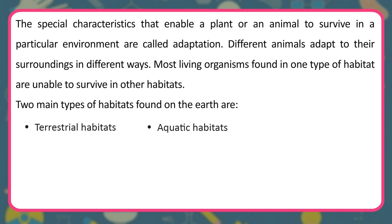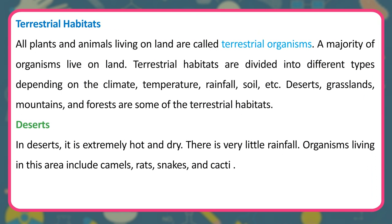Most living organisms found in one type of habitat are unable to survive in other habitats. The two main types of habitats on Earth are terrestrial habitats and aquatic habitats. All plants and animals living on land are called terrestrial organisms, and a majority of organisms live on land. Terrestrial habitats are divided into different types depending on climate, temperature, rainfall, soil, etc. — deserts, grasslands, mountains, and forests are some examples.